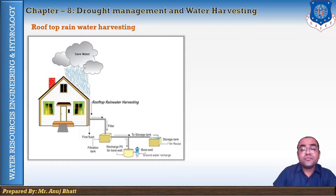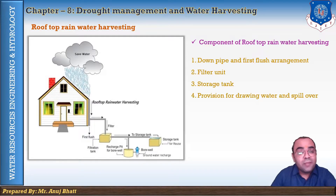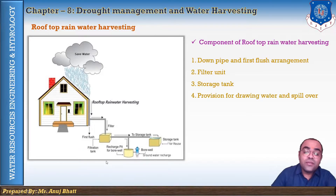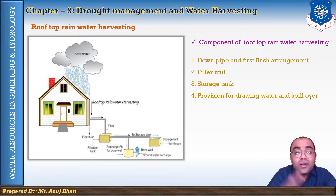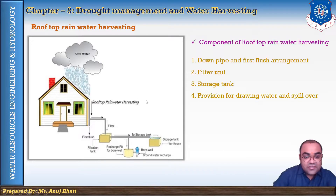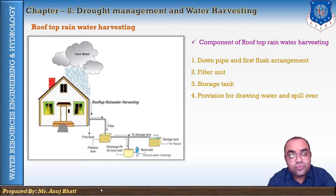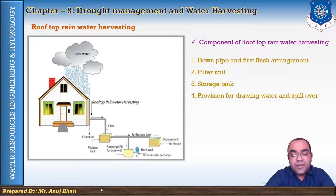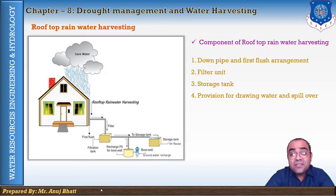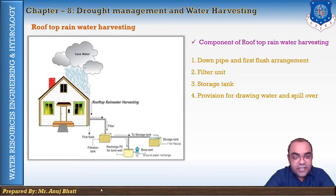The main components of rooftop rainwater harvesting are: the down pipe and first flush arrangement, the filter unit, the surge tank, and provision for drawing water and spillover. The down pipe and first flush arrangement is designed to prevent dust and other unwanted materials from the roof from reaching the storage tank. It is always safe to ensure that the first flush arrangement remains open during non-rainy days and is closed after the first rain to the satisfaction of the end user.